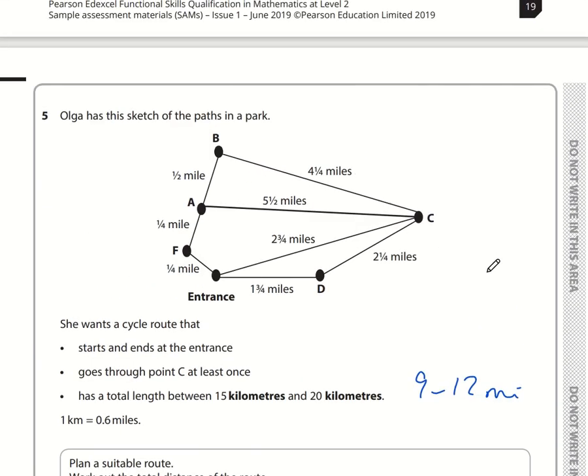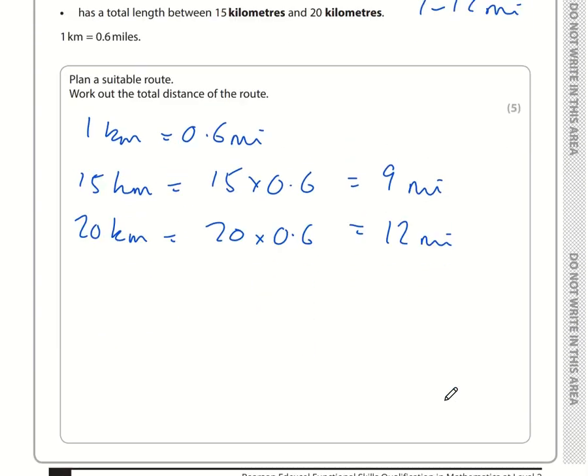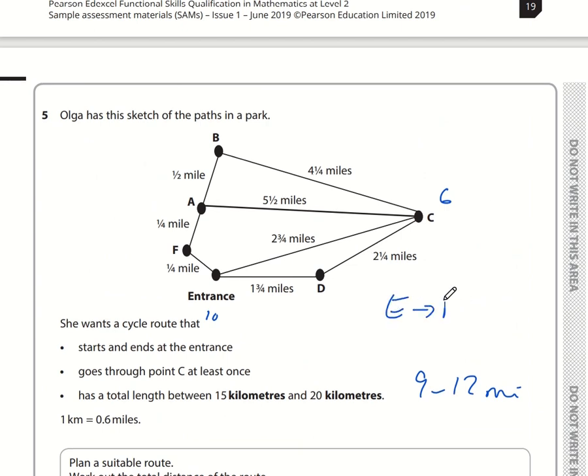Let's go entrance to F, a quarter, to A, another quarter, that's half a mile so far. Then to C is 5.5, so I've got 6 miles total. I need at least another 3 miles. 2 plus 1 gives me 3, and another 3 quarters plus a quarter is 1. So 4 miles. 6 plus 4 is 10 miles, which is between 9 and 12. The route is entrance to F to A to C to D and back to the entrance.